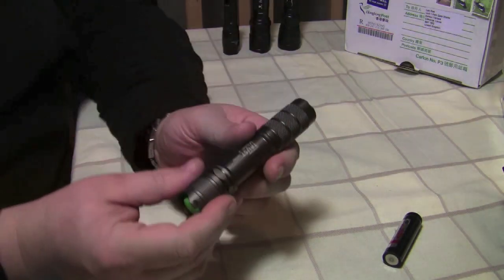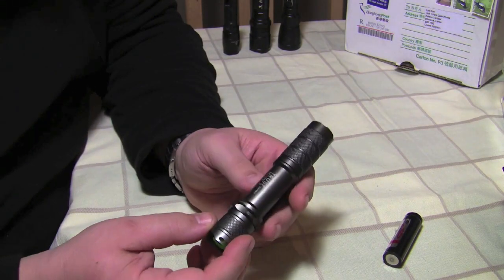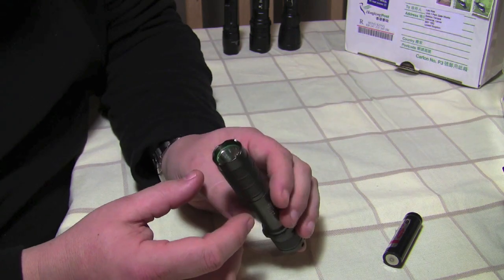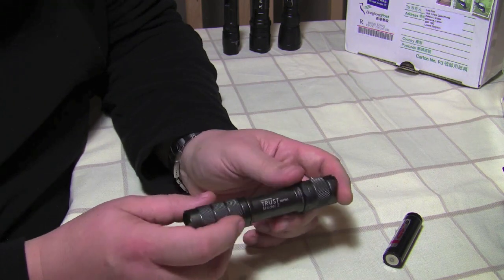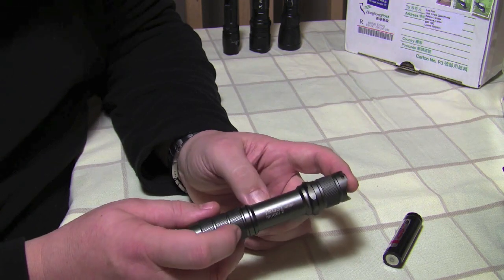So running on the 3.7 volt, which we are now, you're looking at about 450 emitter lumens and on low, about seven emitter lumens and obviously the levels in between.